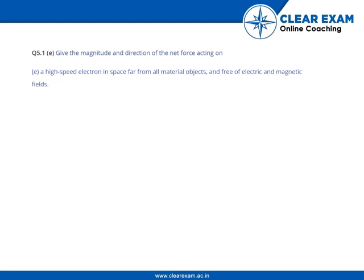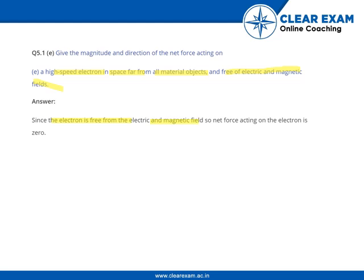Give the magnitude and direction of the net force acting on a high-speed electron in space far from all material objects and free of electric and magnetic fields. Since the electron is free from electric and magnetic fields, the net force acting on the electron is also zero.